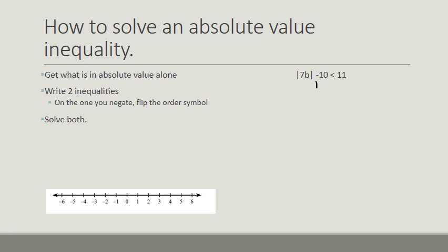So here I would add 10 to both sides, and I would get the absolute value of 7b is less than 21. Then I'm going to write two inequalities.